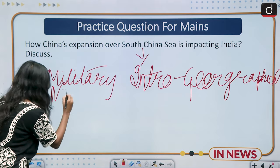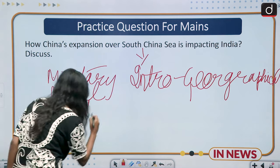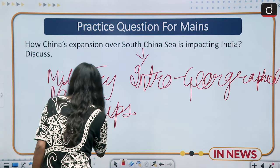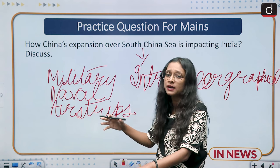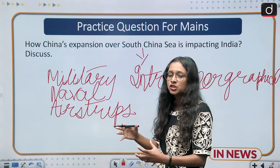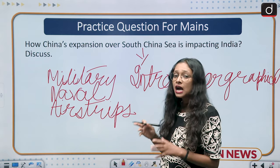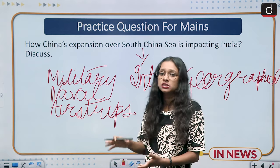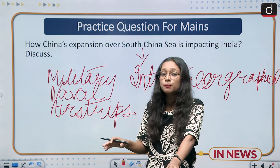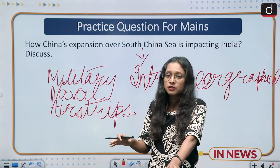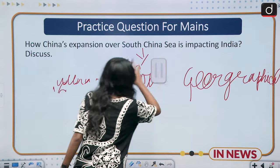China's expansionist initiatives include deploying its military and naval forces; currently they are also setting up air bases by constructing airstrips. China is also building ship harbors and helipads. Through all these steps, China is expanding its base in the South China Sea and harming the autonomy of other countries. The question specifically asks how this impacts India.